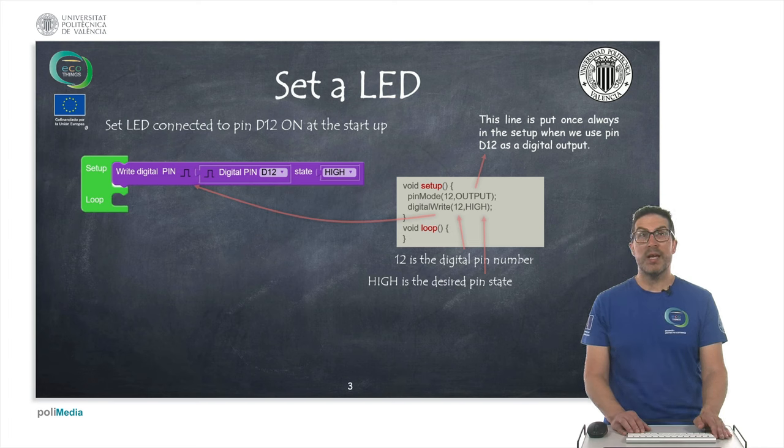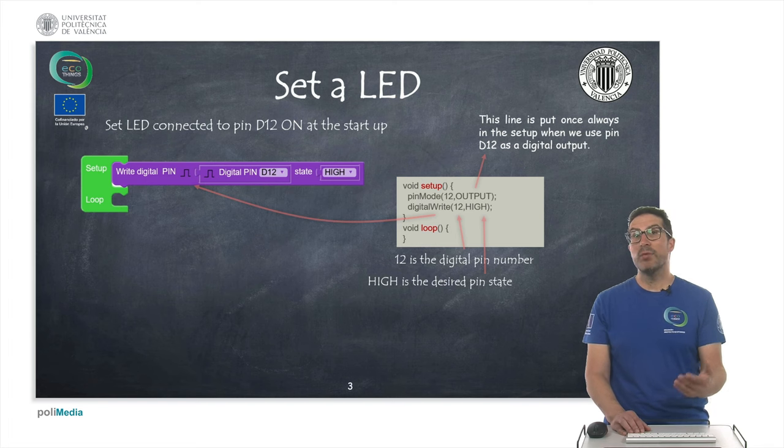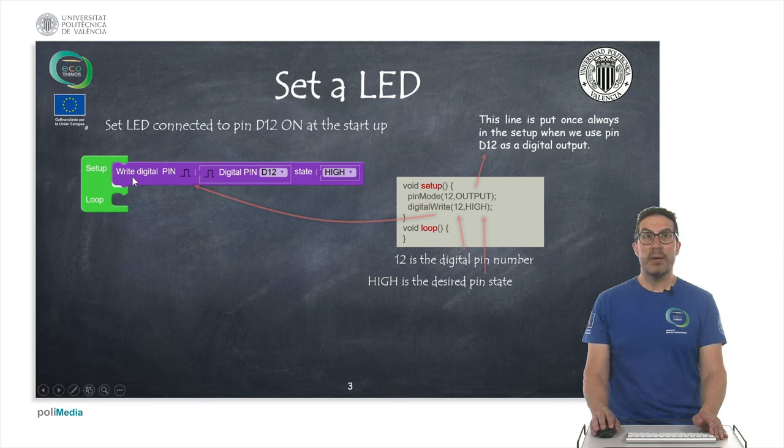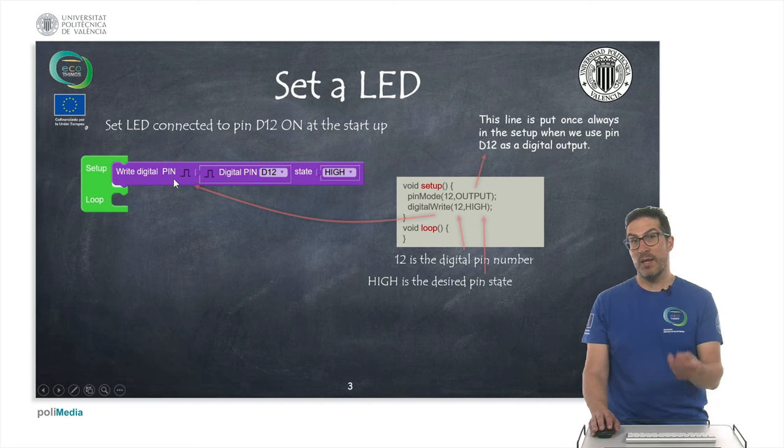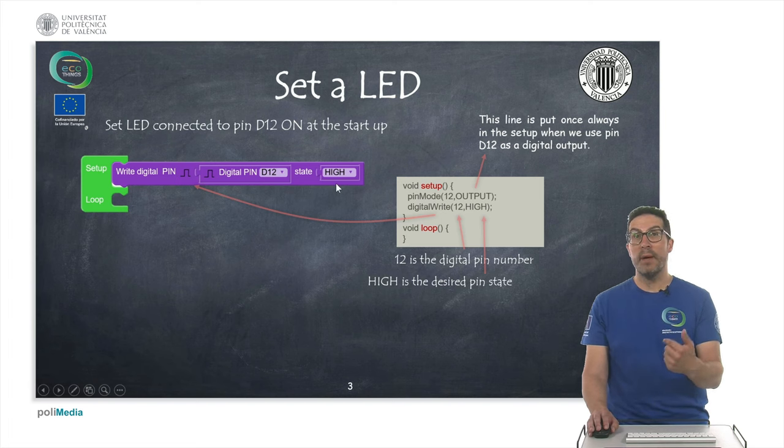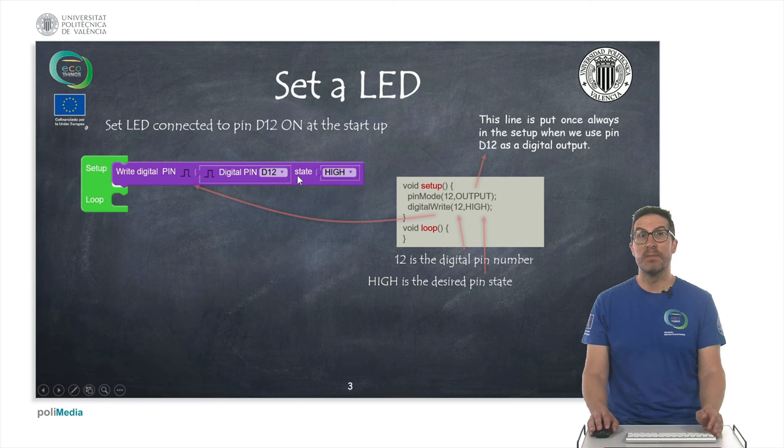In this first exercise, the task is to simply set on an LED which is connected to pin D12 on the Arduino U. And we have to do that only at the startup, at the beginning. And for that we use the instruction write digital because the LED is a digital component that will be set to high or low depending on its state. And here we have to select the pin number.